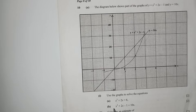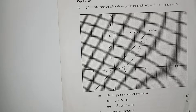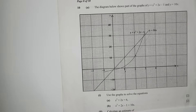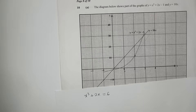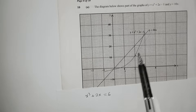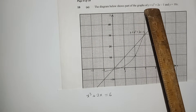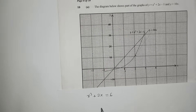For parts a and b, we're supposed to use these two graphs to answer the questions. Let me start with question a. Question a is: x³ + 2x = 6. Now, how do you work out this one? The first thing you need to do is make sure this equation looks similar to what we've been given — y = x³ + 2x − 1.